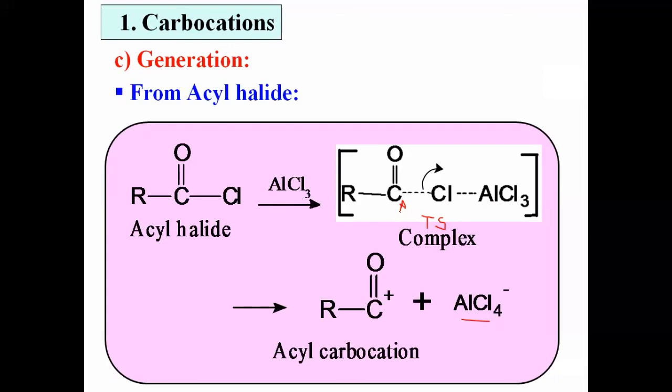In summary, we have discussed reaction intermediates and covered the carbocation in detail. Introduction covered the definition and properties — carbocation is electron deficient, an electrophile, and a Lewis acid. Structure covered the sp2 hybridization, three sigma covalent bonds, and trigonal planar geometry with 120° bond angle. Generation covered how carbocations are formed from alkyl halide, alkene, alcohol, diazonium ion, and acyl halide.